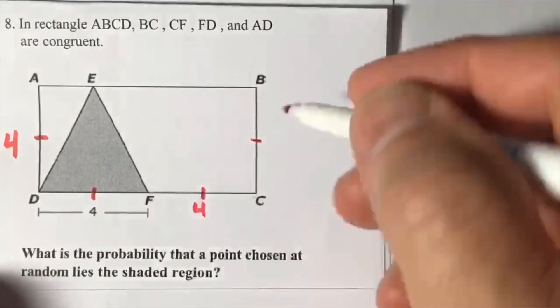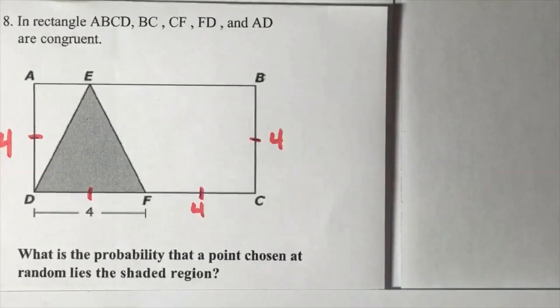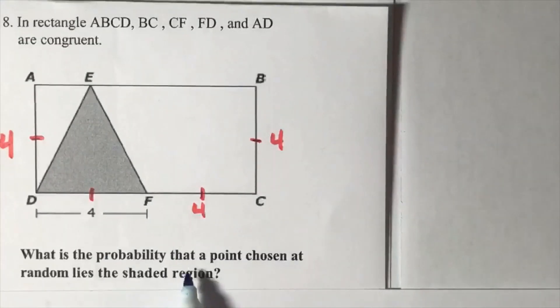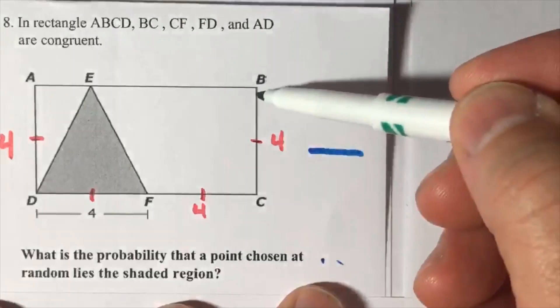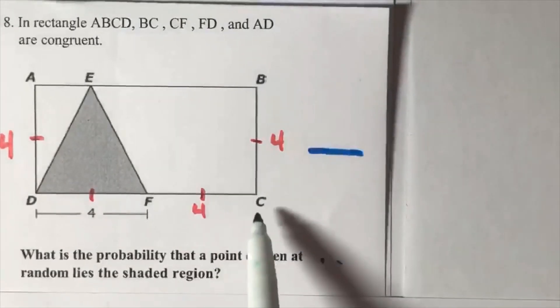The question is: what is the probability that a point chosen at random lies in the shaded region? We know that this side here has to be multiplied by this side: four times eight.